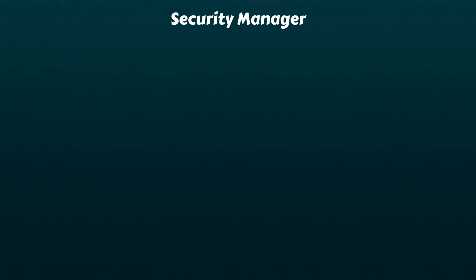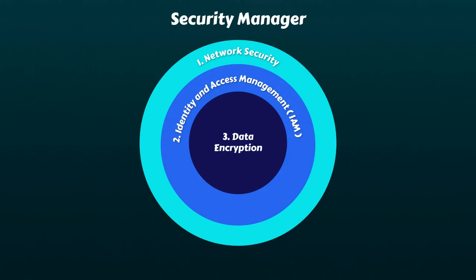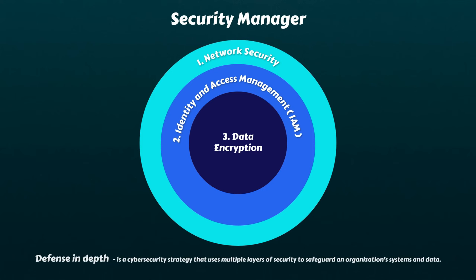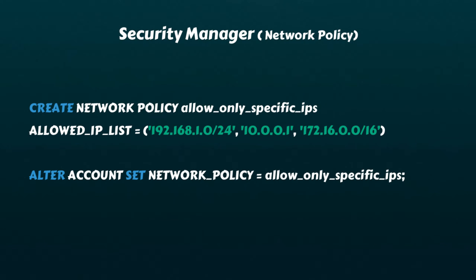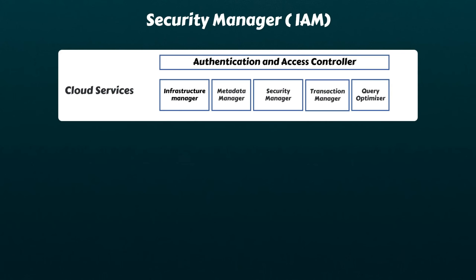Let's proceed to Security Manager. Snowflake secures customers' data using multiple layers of security. This approach is popularly known as defense in depth. Network policies provide the first layer of defense — you can define a range of IP addresses that can access your Snowflake account, and any attempts made from outside this defined range will be automatically blocked. Next, you must prove your identity and access, a process that works in collaboration with the authentication and access control service already covered.